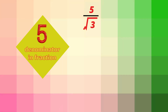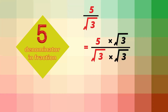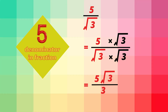Let's simplify 5 divided by root 3. Again, the trick is to multiply the top and the bottom of the fraction by the surd that's on the bottom. The top of the fraction becomes 5 root 3. The bottom of the fraction is root 3 times root 3, which is the number 3. So the answer is 5 root 3 divided by 3.